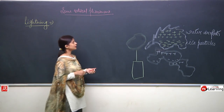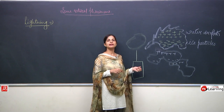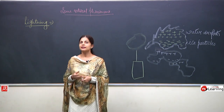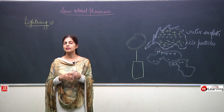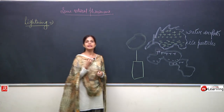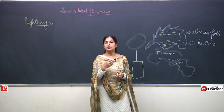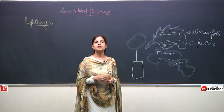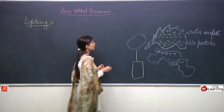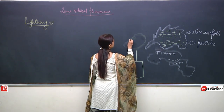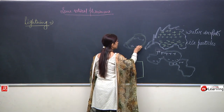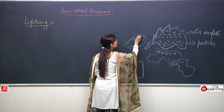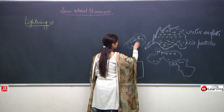Why is it said to stay away from tall towers and tall buildings during lightning? Here again we have a cloud with negative charge at the bottom and positive charge at the top. Now this is a very tall building, and the distance between the building and the cloud is very small.